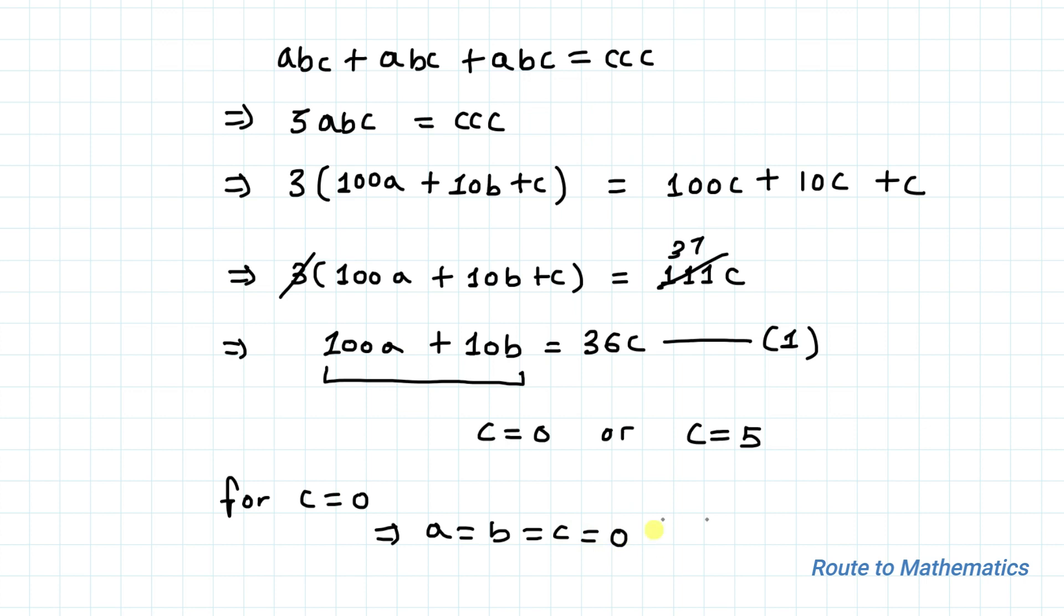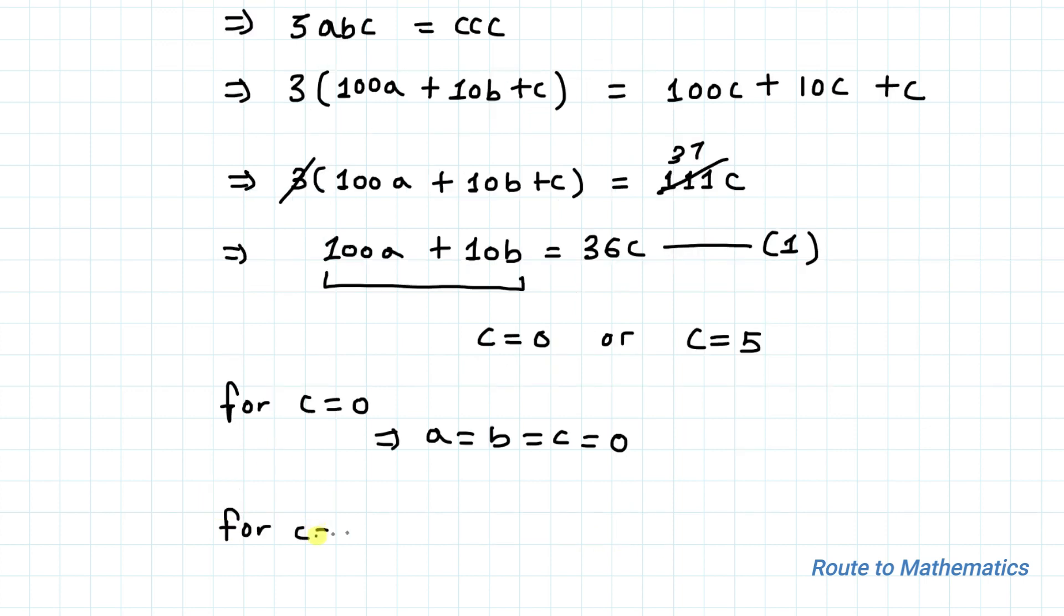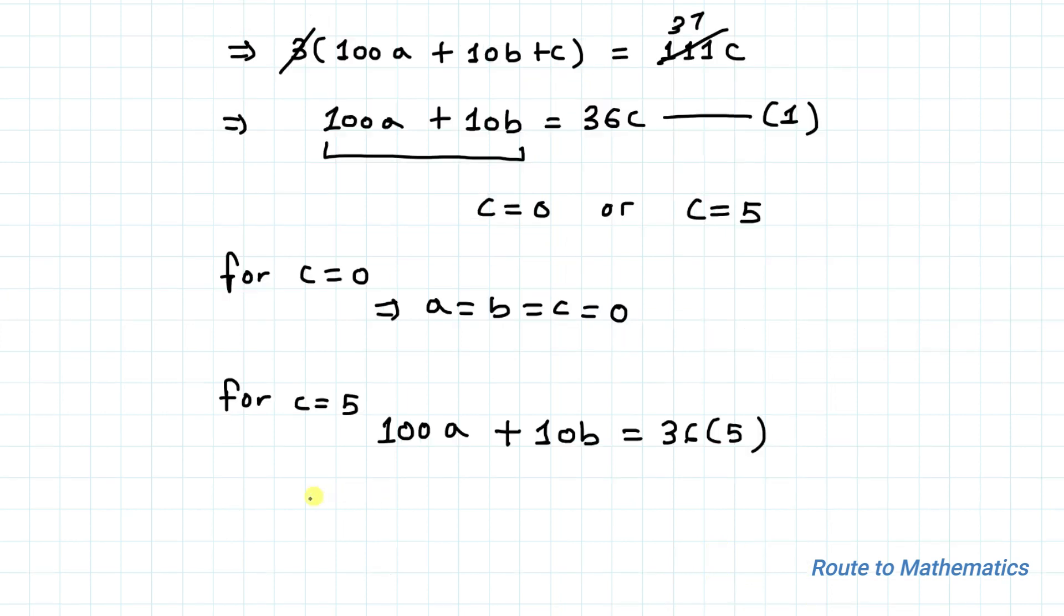For C equals 5, our equation becomes 100A plus 10B equals 36 multiplied with 5, which implies 100A plus 10B equals 180. Now taking 10 common,